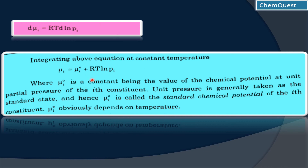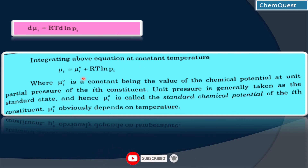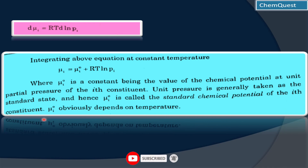When we integrate at constant temperature, the differentials cancel and we get: μᵢ = μᵢ° + RT ln Pᵢ, where μᵢ° is the integration constant. Here R and T are constant, so this equation is μᵢ = μᵢ° + RT ln Pᵢ, where μᵢ° is a constant being the value of chemical potential at unit partial pressure of constituent i. Unit pressure is generally taken as the standard state, so μᵢ° is called the standard chemical potential.